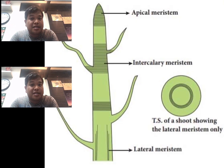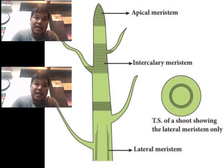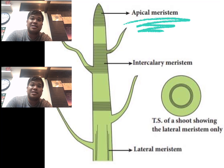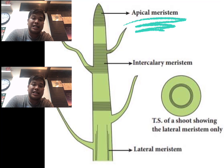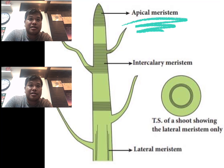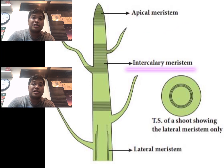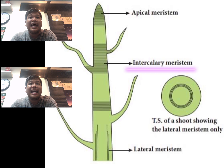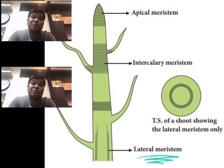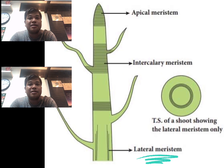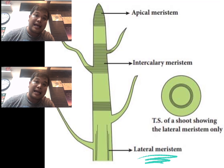There are three types of meristems: the apical meristems found on the tip of the root, the intercalary meristem located at the internode or at the base of the leaves, and the lateral meristems which are present on the lateral side of the stem and root of a plant.